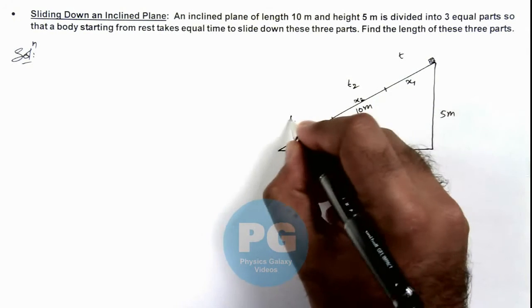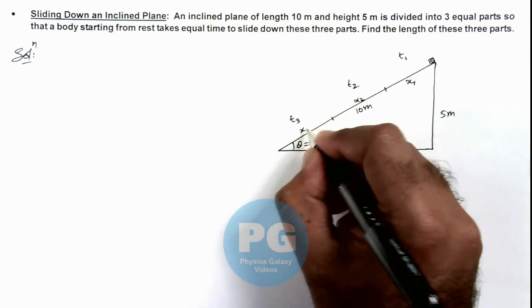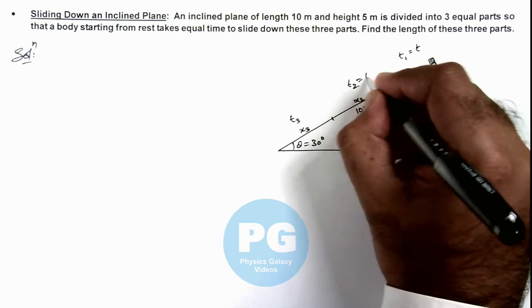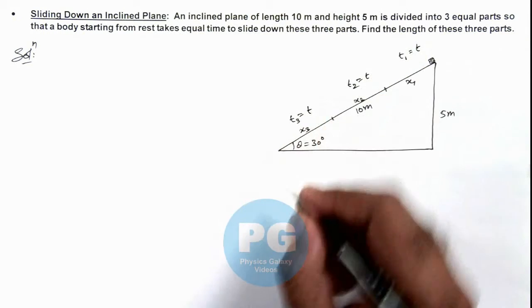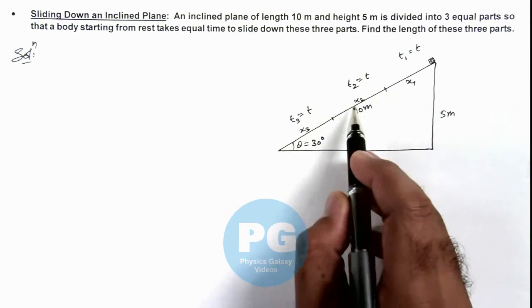And in remaining time t, all these times we are taking as equal, the distance traveled is x3. We are given that t1, t2, and t3 are all equal time intervals. So we are required to find the values of these lengths x1, x2, and x3.